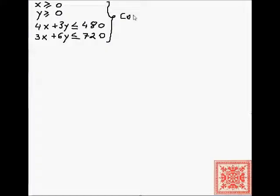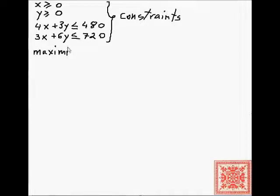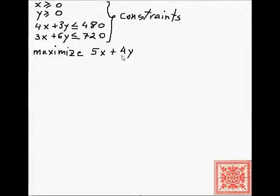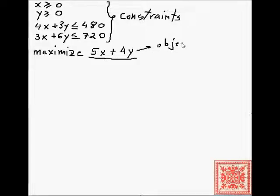Let's consider an example. The constraints are: x ≥ 0, y ≥ 0, 4x + 3y ≤ 480, and 3x + 6y ≤ 720. The objective function to maximize is 5x + 4y.